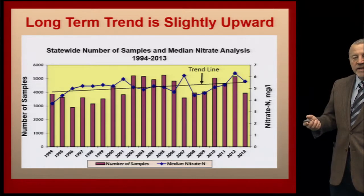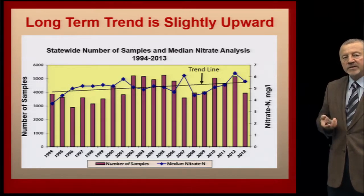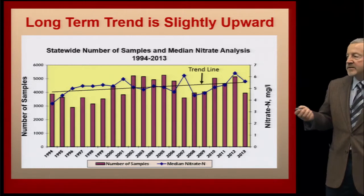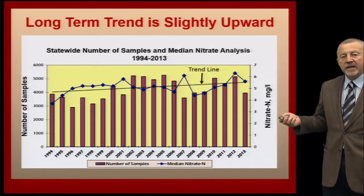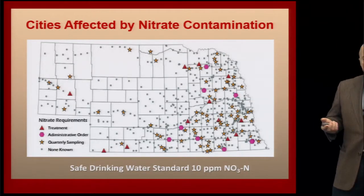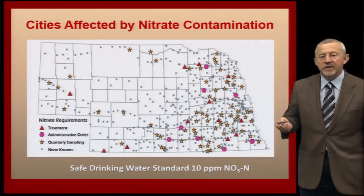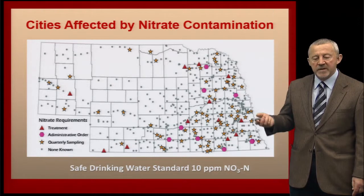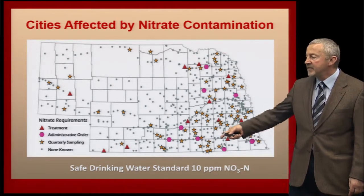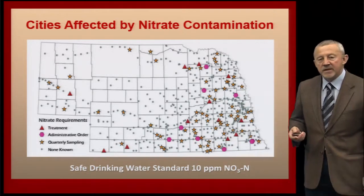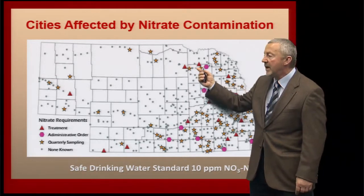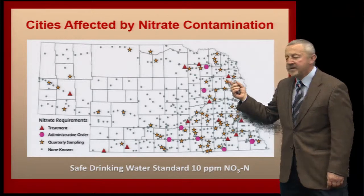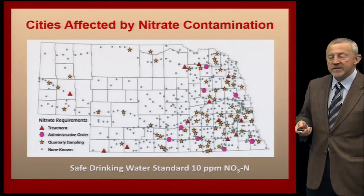Looking at the long-term trend starting back in 1994, all the water samples collected are graphed here, and you can see the trend is slightly upward if you put a trend line to it. The long-term trend is upward. From a drinking water perspective, the safe drinking water standard is 10 parts per million nitrate nitrogen in the water. The triangles on this graph show areas where cities have already had to make adjustments or treat the water they supply for their domestic and city water supplies.